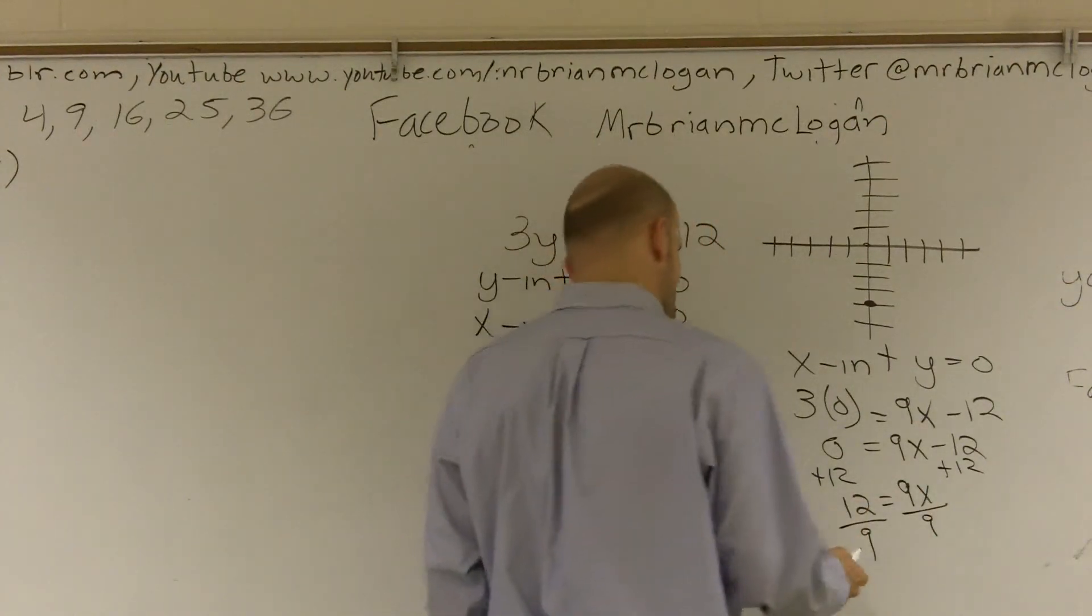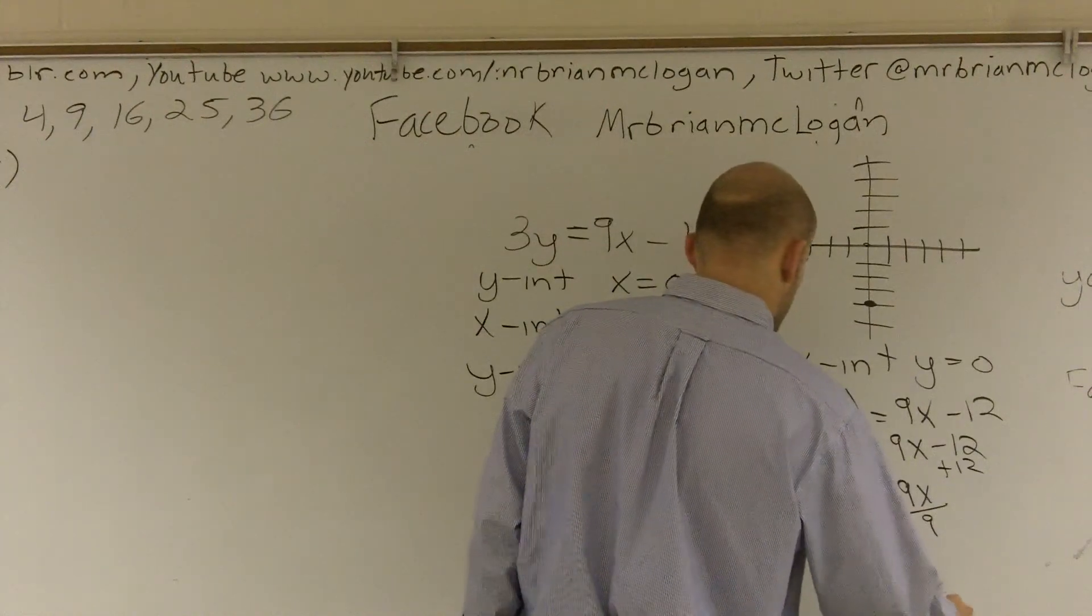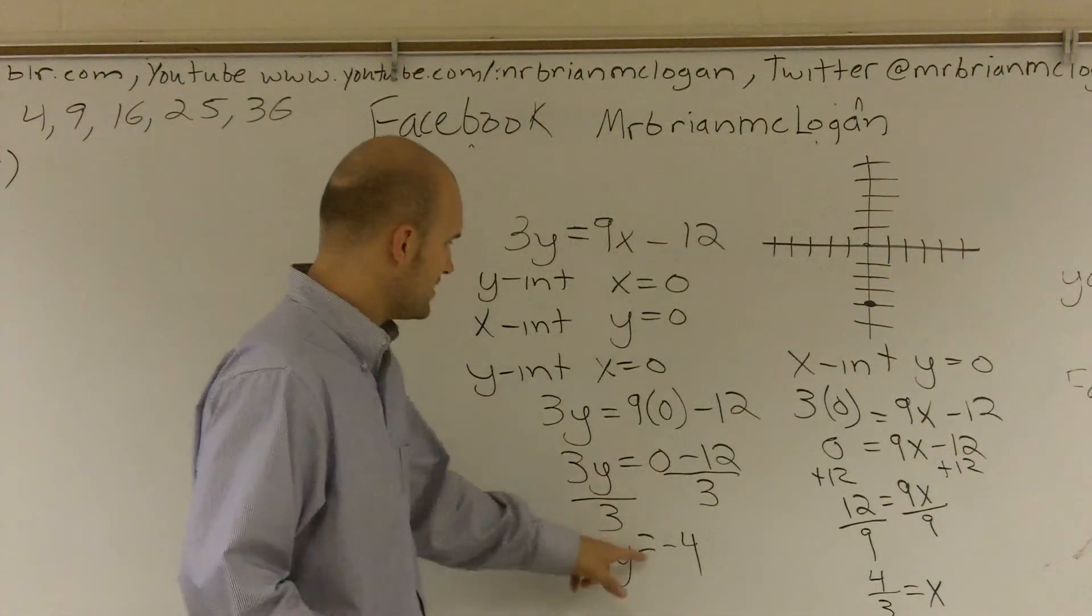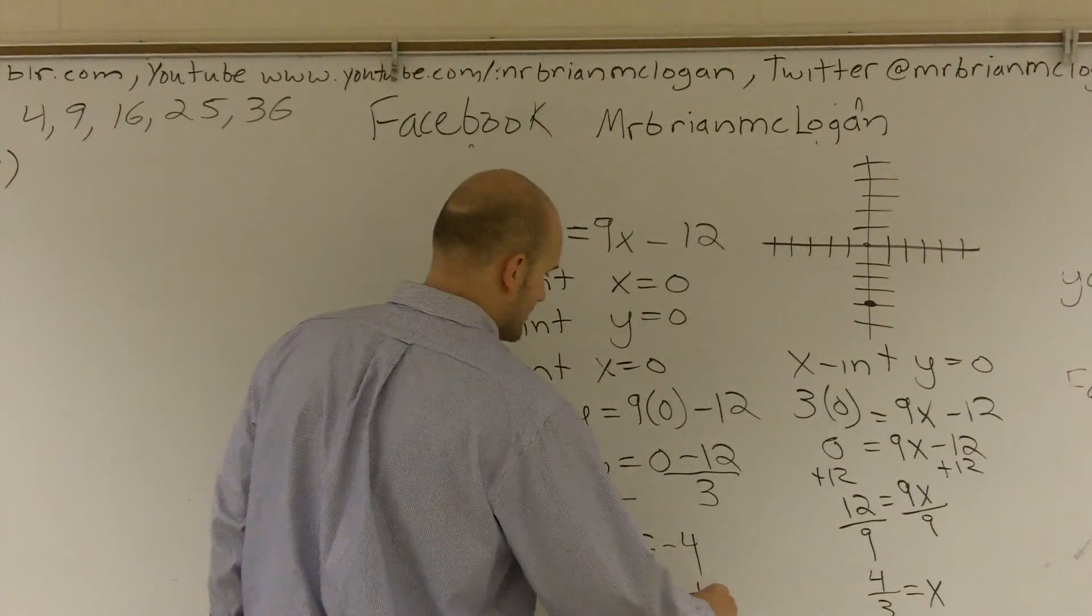Undo my multiplication of nine. So I divide. This is going to give me four thirds equals x. So one thing I probably should have shown you - when you have x equals zero, y equals negative four, we know our point is going to be zero, negative four.